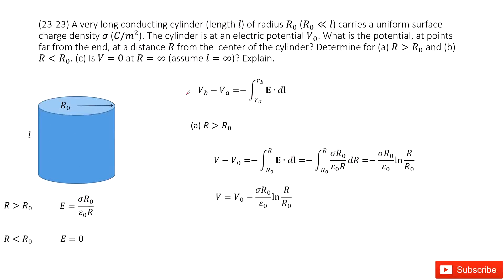Next we use the potential formula from the textbook. We take the reference point at r = r₀, because we're told the potential at the surface equals V₀. So we consider 'a' as r₀. For the case r > r₀, we perform the integral from r₀ to r.